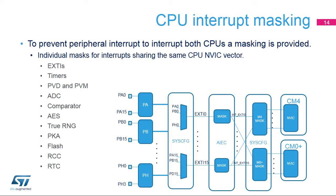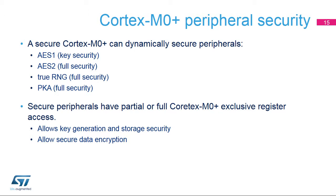Peripheral interrupts sharing the same NVIC vector have a mask to prevent them from interrupting both CPUs. The AES Accelerator 1, the AES Accelerator 2, the public key accelerator, and the true random number generator peripherals can dynamically be made secure by the Cortex-M0 Plus firmware through secure register bits in the system configuration block, enabling access to the secure part of the internal SRAM or flash memories.